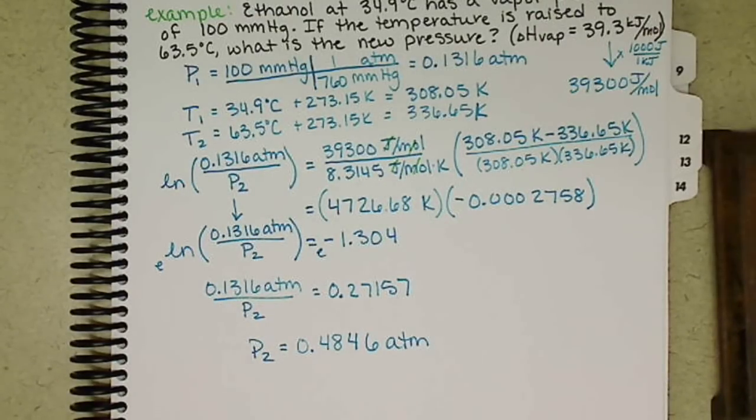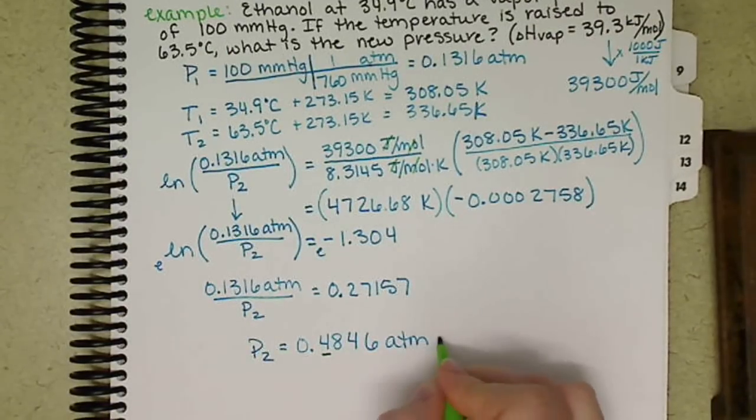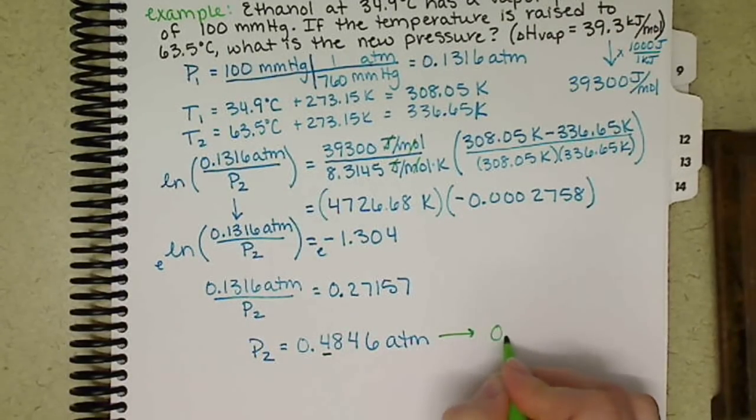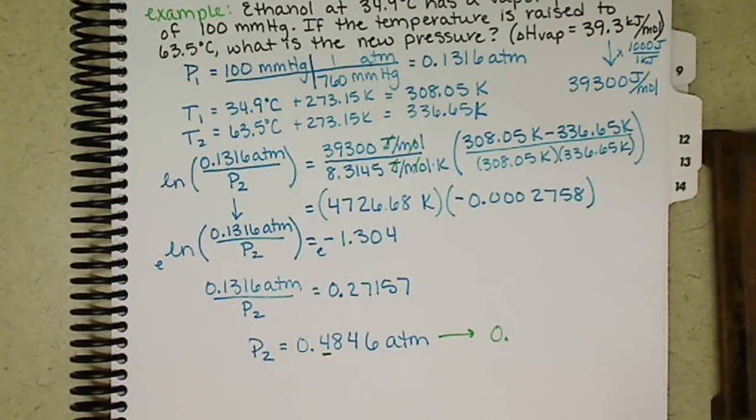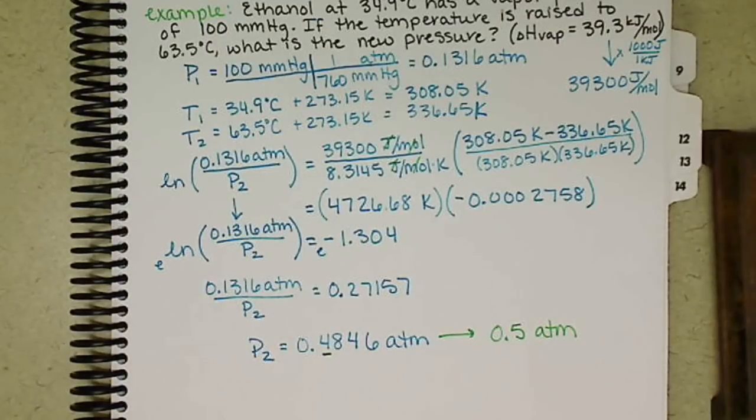Let's see, significant figure wise, well, it cuts it down a lot, but that 100 millimeters of mercury in the question has one sig fig, so I guess technically, well not technically, but sig fig wise, our value is going to be 0.5 atmospheres.